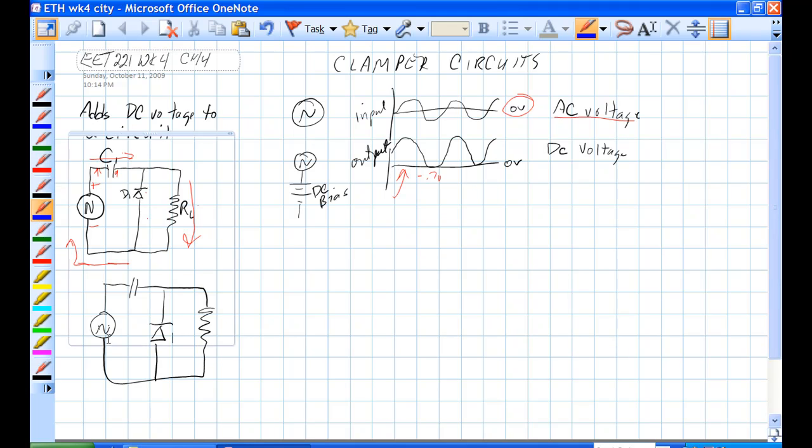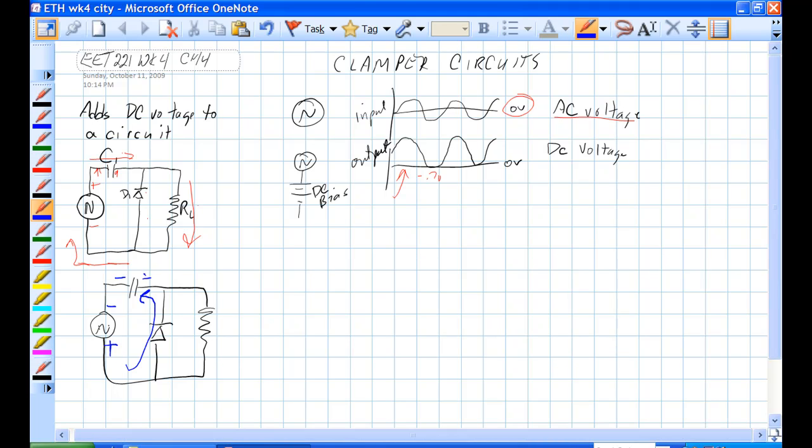What about when, let's go, we have positive here. Positive here, negative here. We have a possibility of current flow here. This cap is filled negative on this side, actually negative on this side, positive on this side, and the cap charges to the peak, whatever this is, minus 0.7 volts.